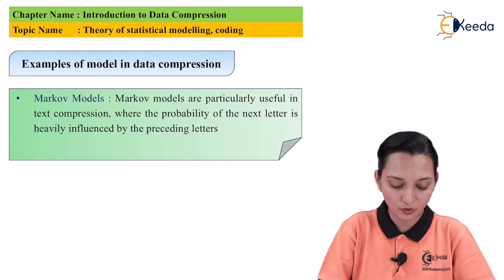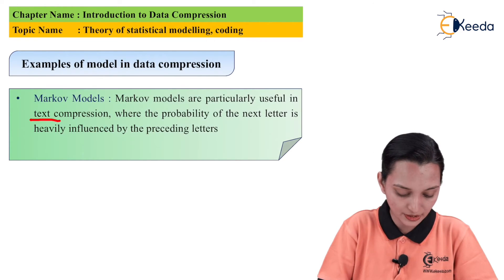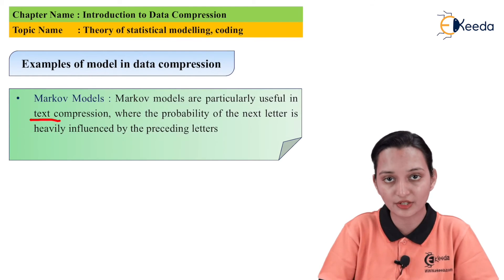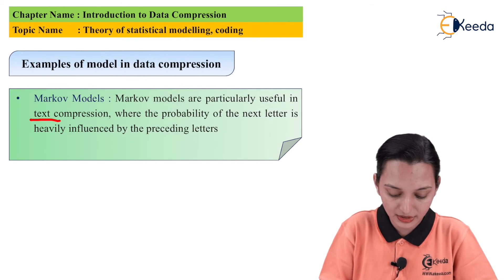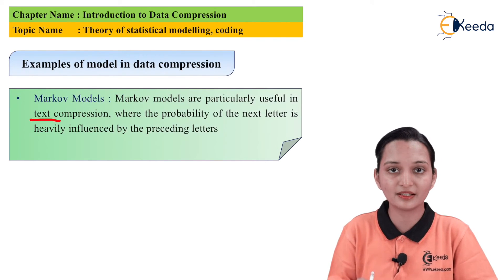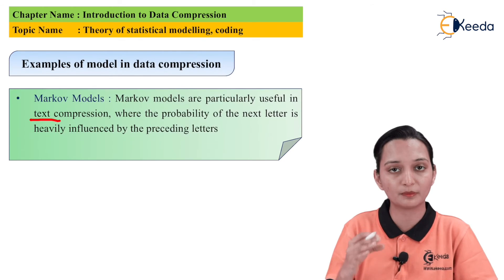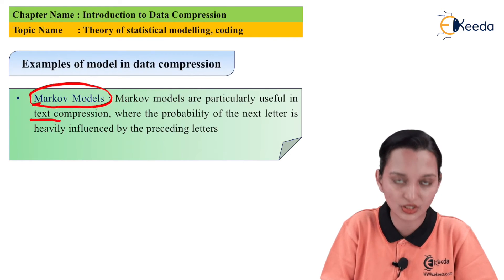The third one is the Markov model. These are particularly useful in text compression. The probability of the next letter is influenced by the previous letter. When your present data or the output of the present data depends on the past data, you use this kind of model.